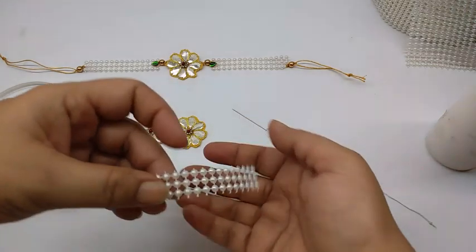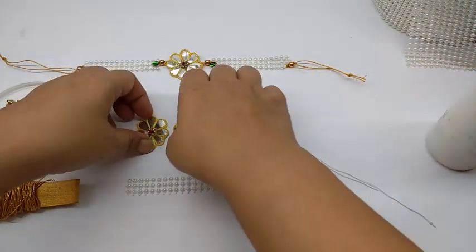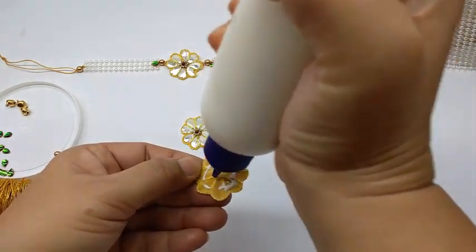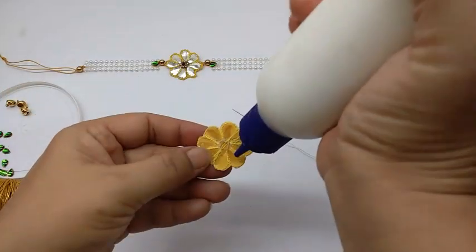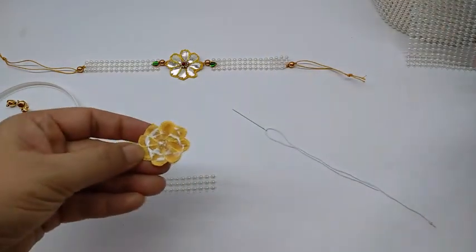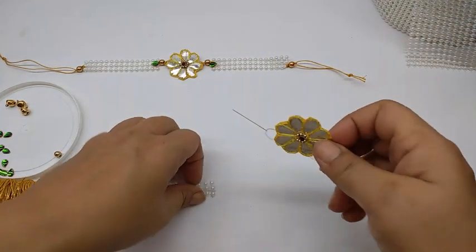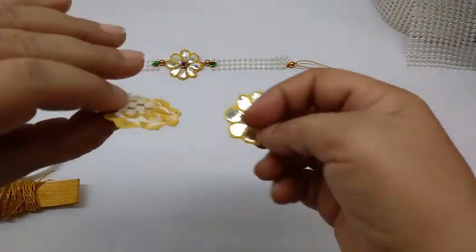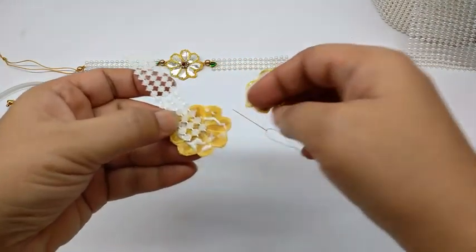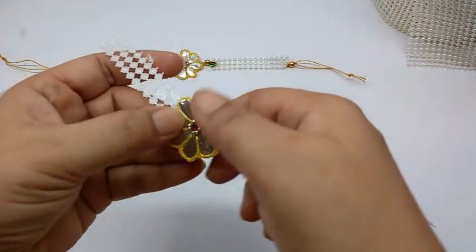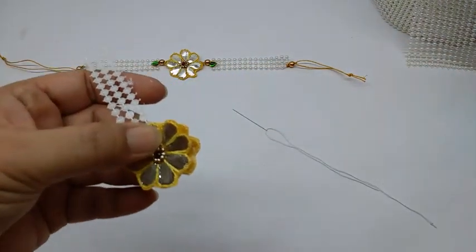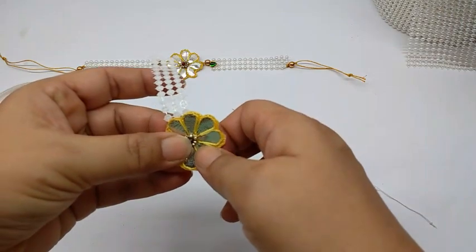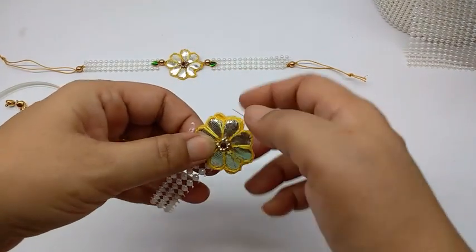For the loomba, I have again cut a strip of the pearls. Now take these two flowers, apply glue on them. First stick one slightly on the lower side and stick the other one on it. Now just let it dry.